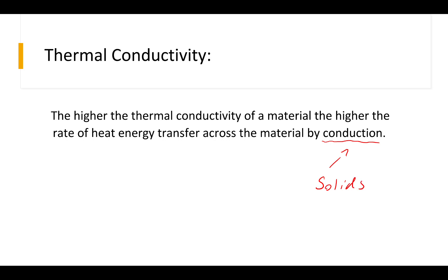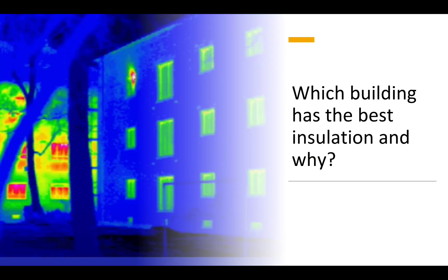So which one of these buildings is giving off the most heat — the one on the left or the one on the right? Well, it's obviously the one on the left, because this thermal imaging camera can see the heat coming out of the walls. So with regard to thermal conductivity, the building on the left is the better thermal conductor, which is not necessarily a good thing for a house — although it could be, depending on if you're in a hot country and want the house to cool down.